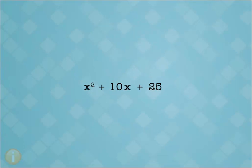Here's a trinomial with a leading coefficient of 1, x squared plus 10x plus 25. Is this a perfect square trinomial? If it is, the last term must be the square of an integer, which it is. It's the square of plus 5 and the square of minus 5.